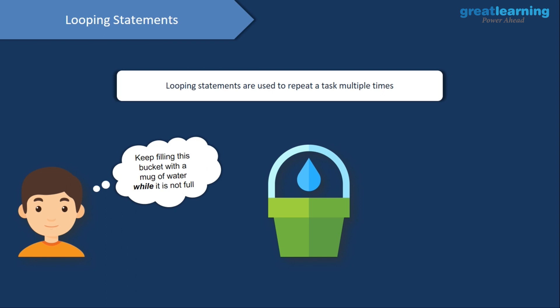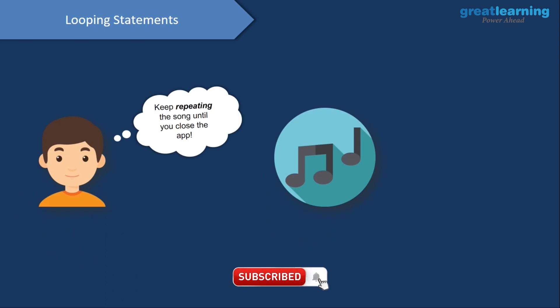You take another mug full of water, pour it into the bucket, and again check if the bucket is full. This process goes on until the bucket is completely filled with water — you stop only when the bucket is filled. Another example: you're listening to your favorite song on loop. The same song keeps playing until you either close the app, stop the song, or switch off your phone.